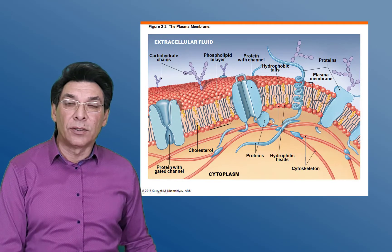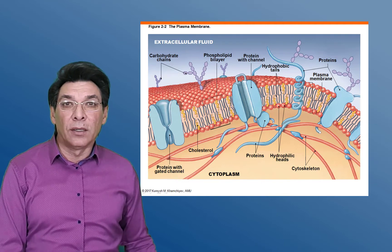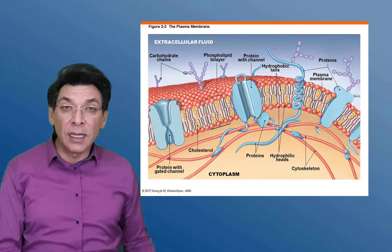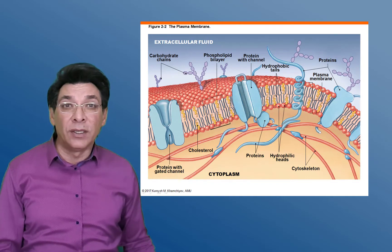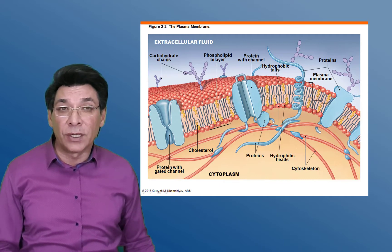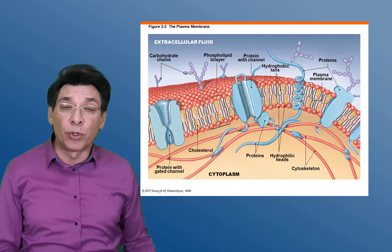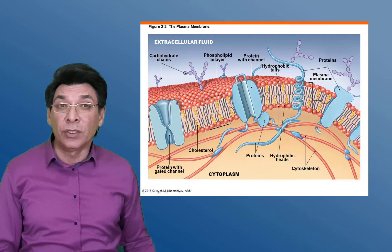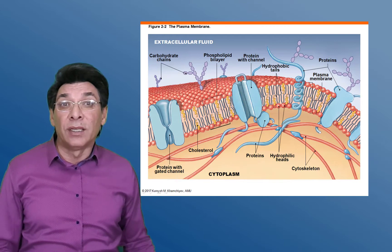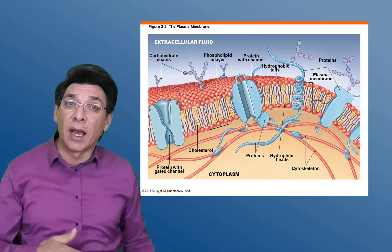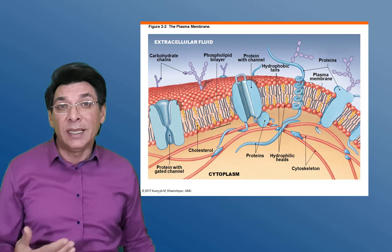Hello, welcome back dear students. Today we are going to be talking about the plasma membrane. Cells, as we have seen in the introduction to physiology, are made from organelles that abound and are contained within a plasma membrane. The plasma membrane (PM) is the structure that determines the boundary that differentiates the inside of the cell from the outside.